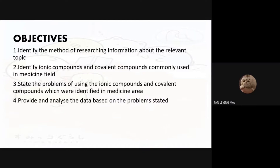We need to identify the method of researching information. We also need to identify the ionic compounds and covalent compounds which are commonly used in the medicine field, and we need to set out the problems of using these ionic and covalent compounds identified in the medicine area.